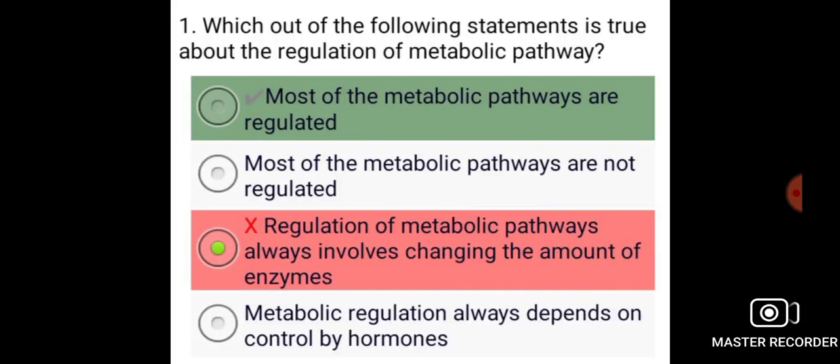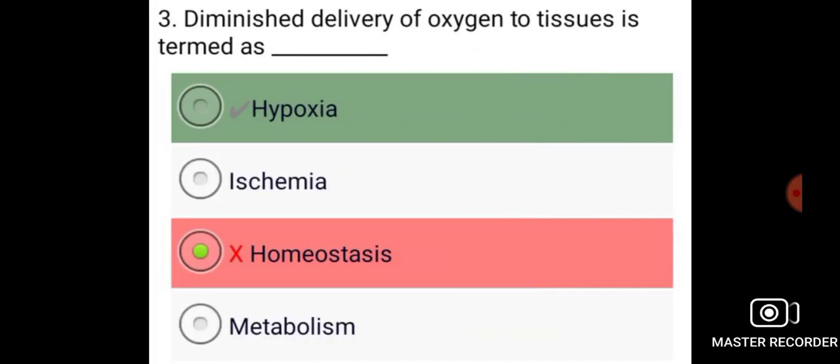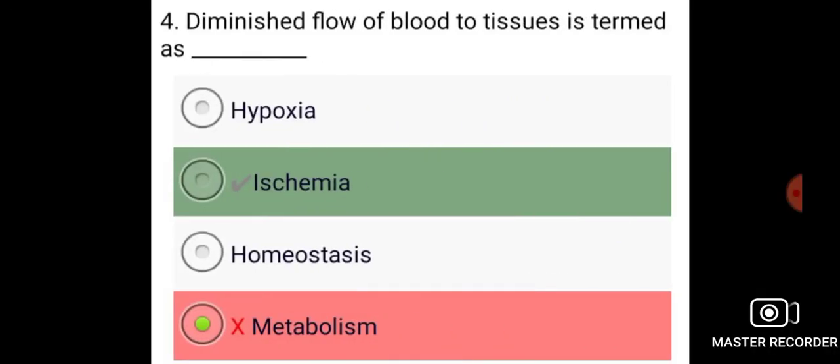Which of the following statements is true about the regulation of metabolic pathways? Most of the metabolic pathways are regulated. The rate of breakdown of metabolites is termed as steady state. Diminished delivery of oxygen to tissues is termed as hypoxia. Diminished flow of blood to tissues is termed as ischemia.